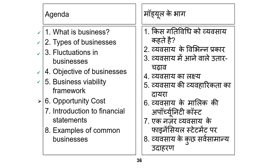So you have to think about the 4C plus E framework. We will see each C and each E one by one in the modules. Now let's go to the next topic — Number 6, which is called Opportunity Cost. In Hindi we also call it Opportunity Cost, because a good Hindi translation is not available. We will now discuss what Opportunity Cost means.